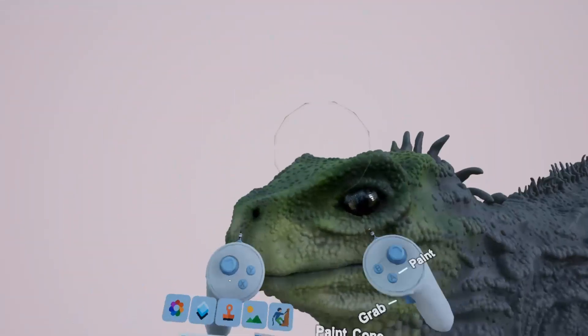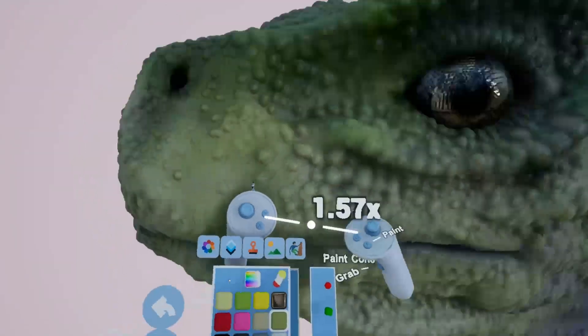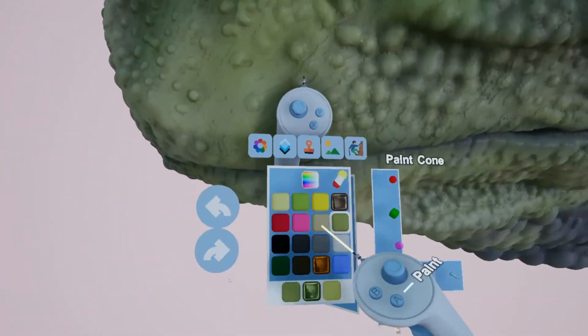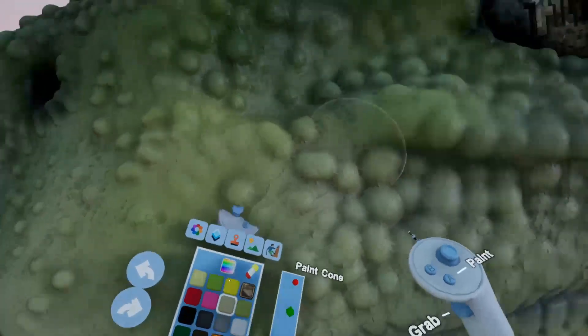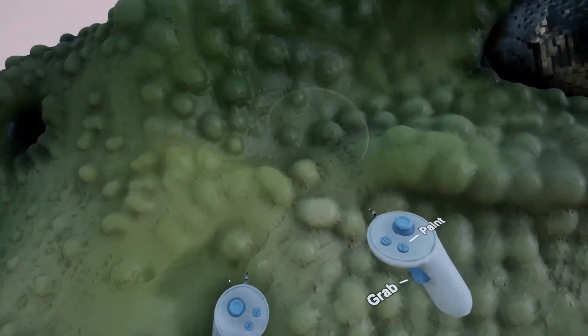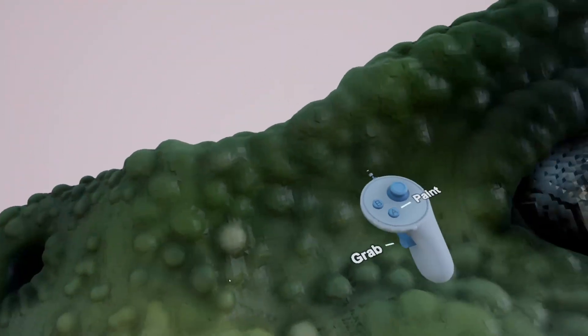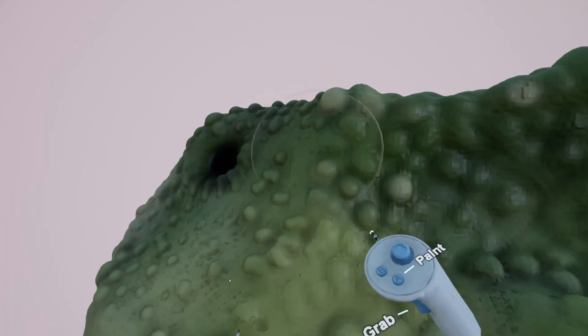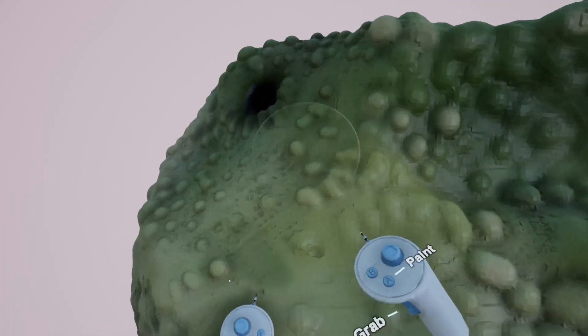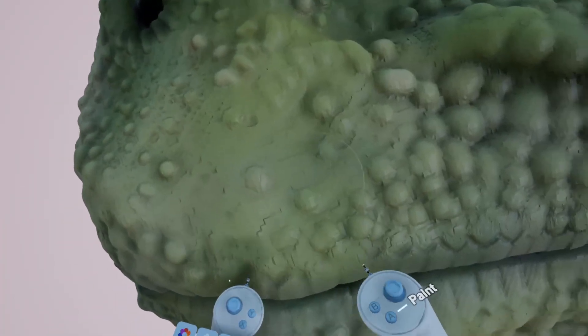Still not quite looking really lifelike because these particular lizards, the scales are slightly different colors. Now just start coloring just the odd scale here and there, and that suddenly starts making them stand out and looking a little bit more textured because it sort of highlights different scales.